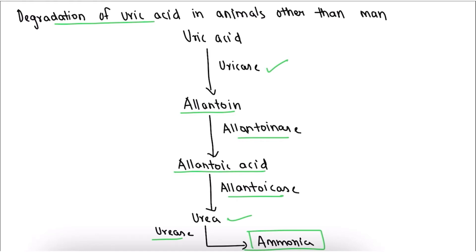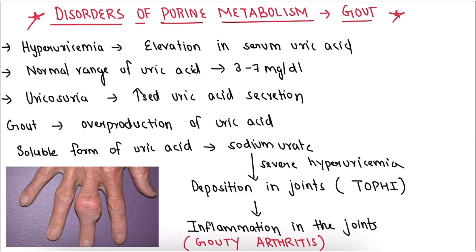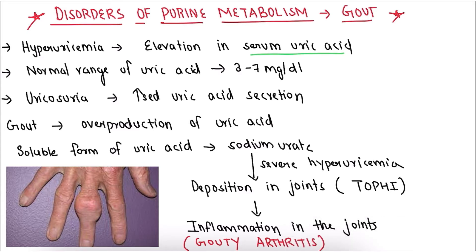Having completed the degradation of purines, let's study the disorders of purine metabolism, mainly gout. What is hyperuricemia? Hyperuricemia is the elevation of serum uric acid. The normal range of uric acid is 3 to 7 mg per deciliter. Uricosuria refers to increased uric acid excretion in urine.